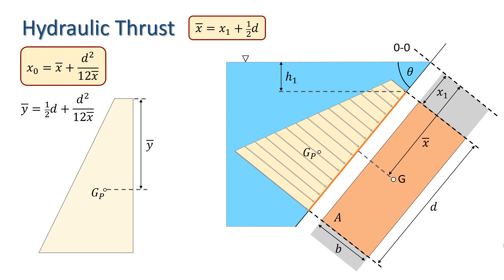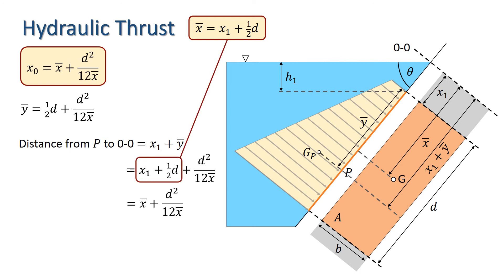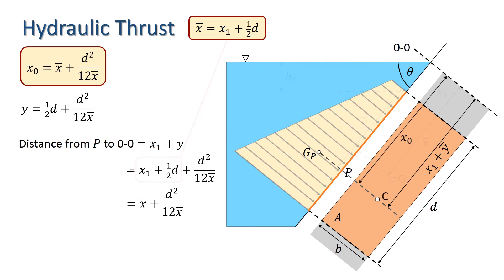Going back to our inclined plane surface, we can see from the geometry that if we make an orthogonal projection of GP onto a point P on the plane surface, then P is a distance Y bar from the top of area A and thus is a distance X1 plus Y bar from OO. Given our expression for Y bar, this means P is a distance of X1 plus one-half D plus D squared over 12 X bar from OO. We also know that X bar equals X1 plus one-half D, so this expression is identical to the formula for X0. Thus we have shown that the point P coincides with the centre of pressure C. The pressure diagram therefore provides an alternative way of finding the centre of pressure.